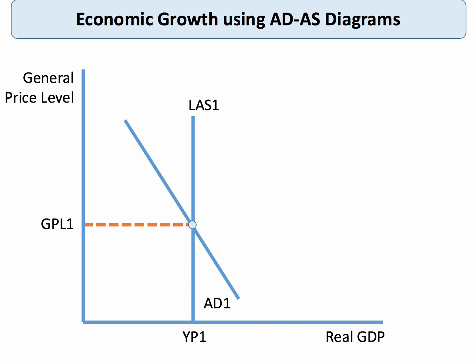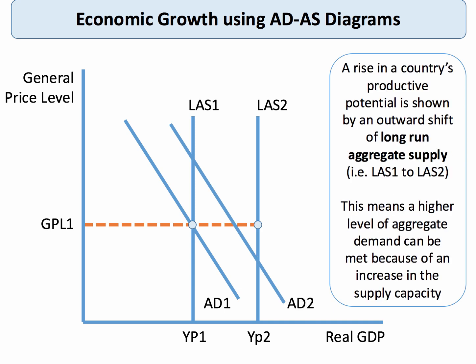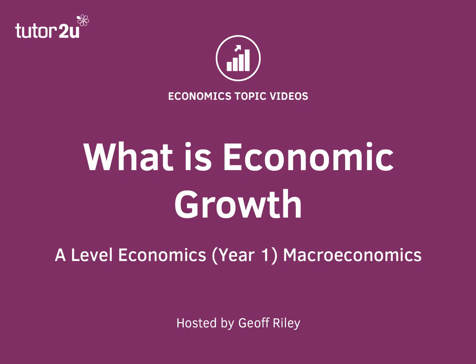We could also show long-term growth using aggregate demand and aggregate supply. Here's an initial position. If we can achieve an expansion in a country's productive potential, then we can shift our long-run aggregate supply curve to the right — in other words, the potential output of the economy has increased. And that allows the country to shift its aggregate demand curve a little bit to the right; it may actually shift all the way to YP2. It means that the economy has the productive capacity to meet a higher level of demand. In this video, we have looked at what is economic growth, and we've made a distinction between short-term and long-term factors affecting the growth of an economy.